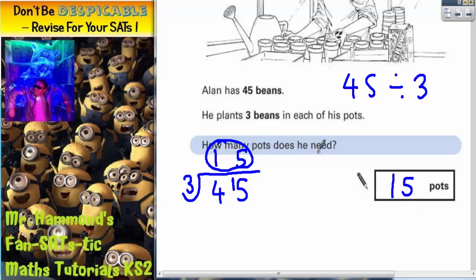We could just double check by making sure if we do 15 pots times by the 3 in each pot, we get back to 45. 3 fives are 15. 3 ones are 3 plus that 1 is 4. So we would indeed, if we had 15 pots and 3 in each pot, we would have 45 beans. So that does work.